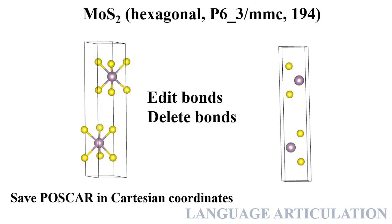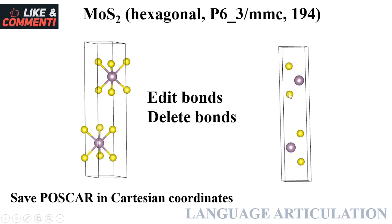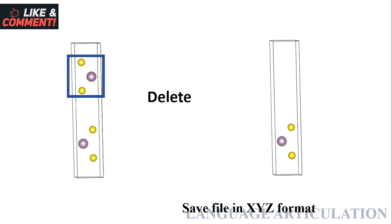We will start with molybdenum disulfide, which is a very famous system. I will create all the files using VESTA. First, you have to go to Edit Bonds, then delete bond. When you delete bond, it will not actually delete the bond — it will just show you the exact number of atoms in a unit cell. Then you have to save that file as a POSCAR in Cartesian coordinates.